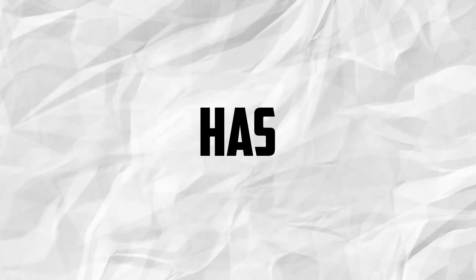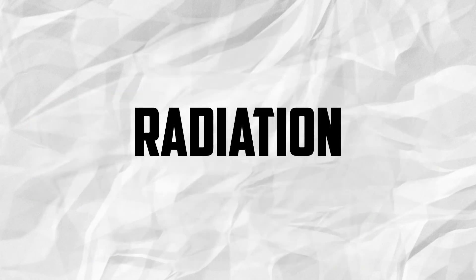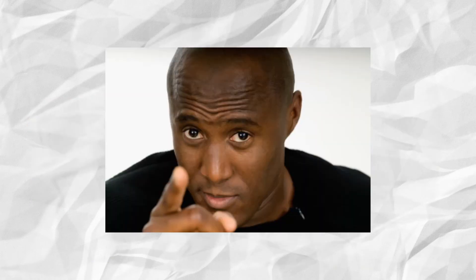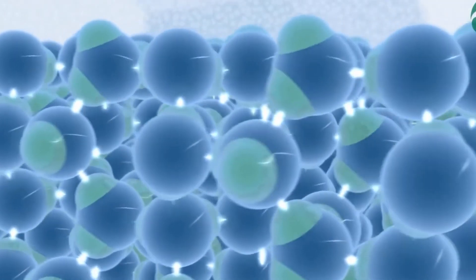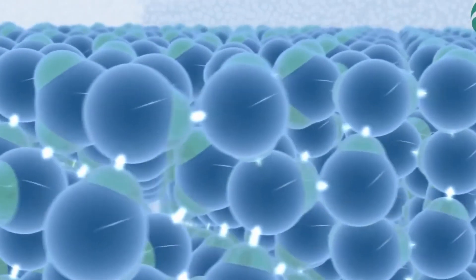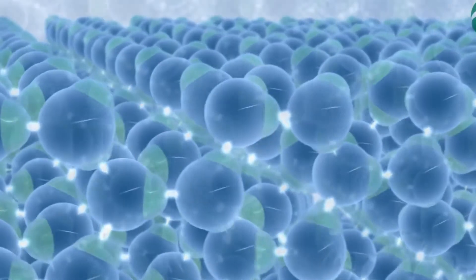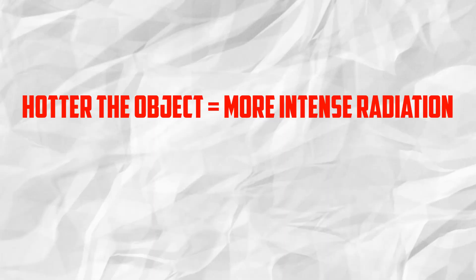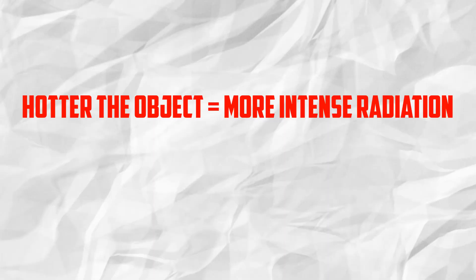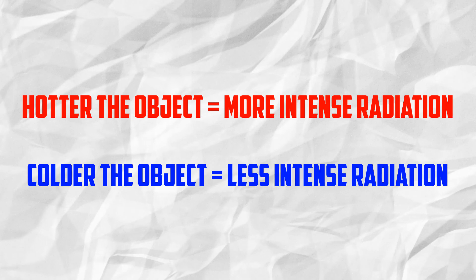Believe it or not, everything that has a temperature emits radiation, including you. All objects have moving molecules, and when their atoms move, their electrons emit electromagnetic waves, or radiation. The hotter the object, the more intense the radiation it emits. The colder the object, the less intense the radiation it emits.